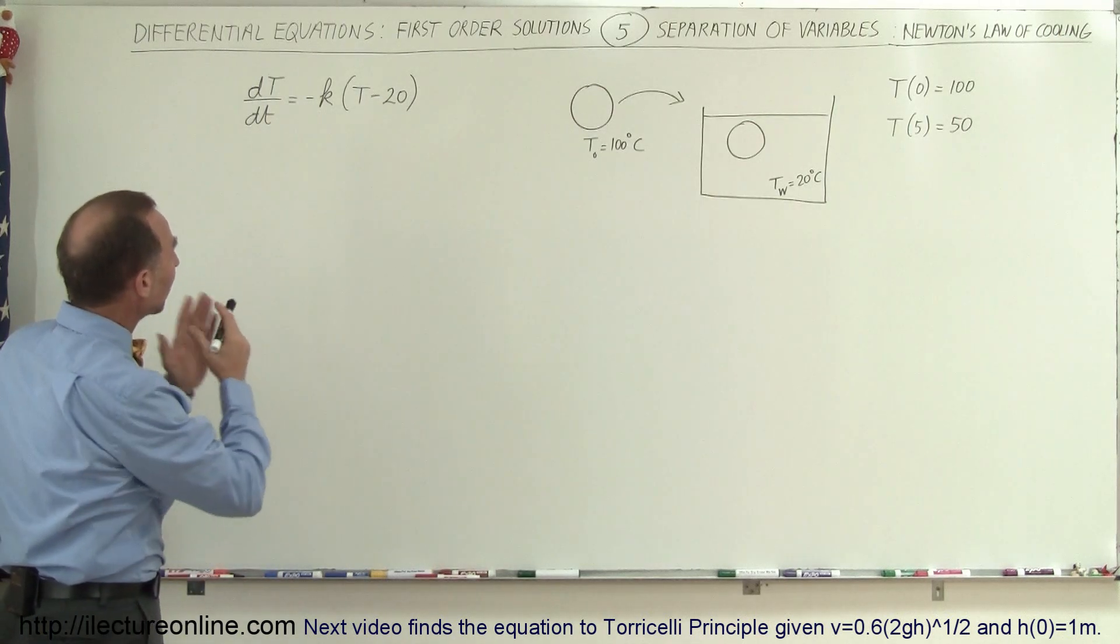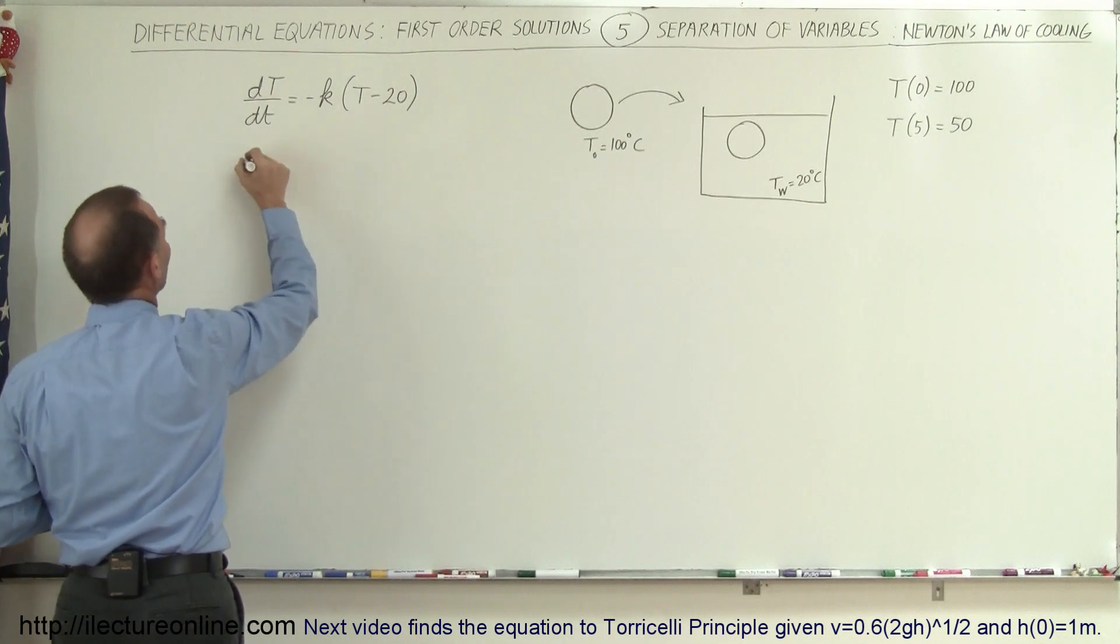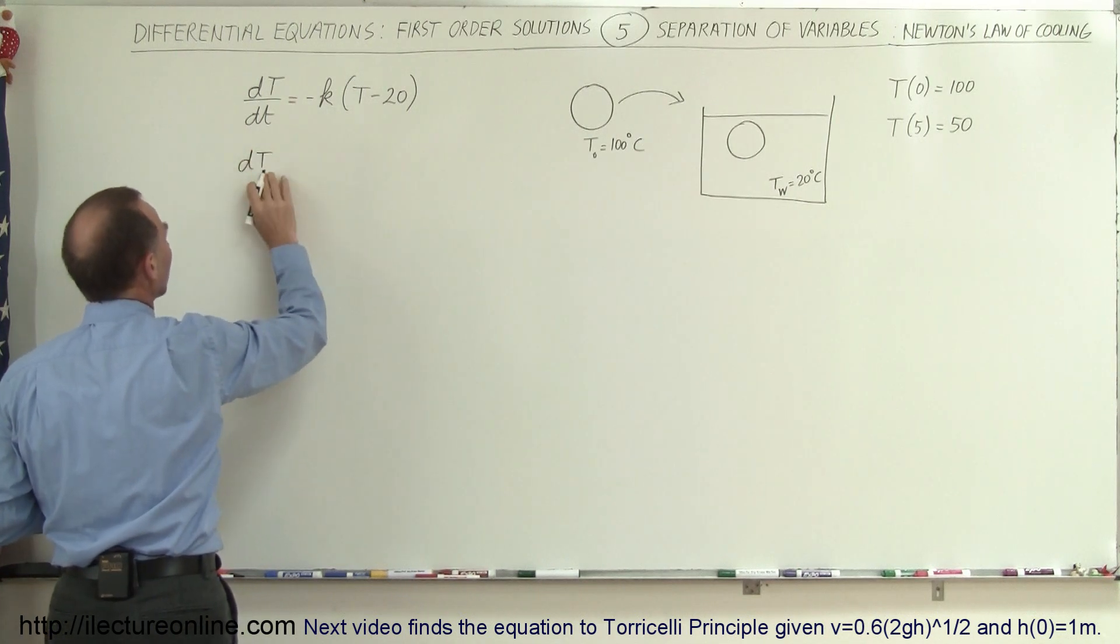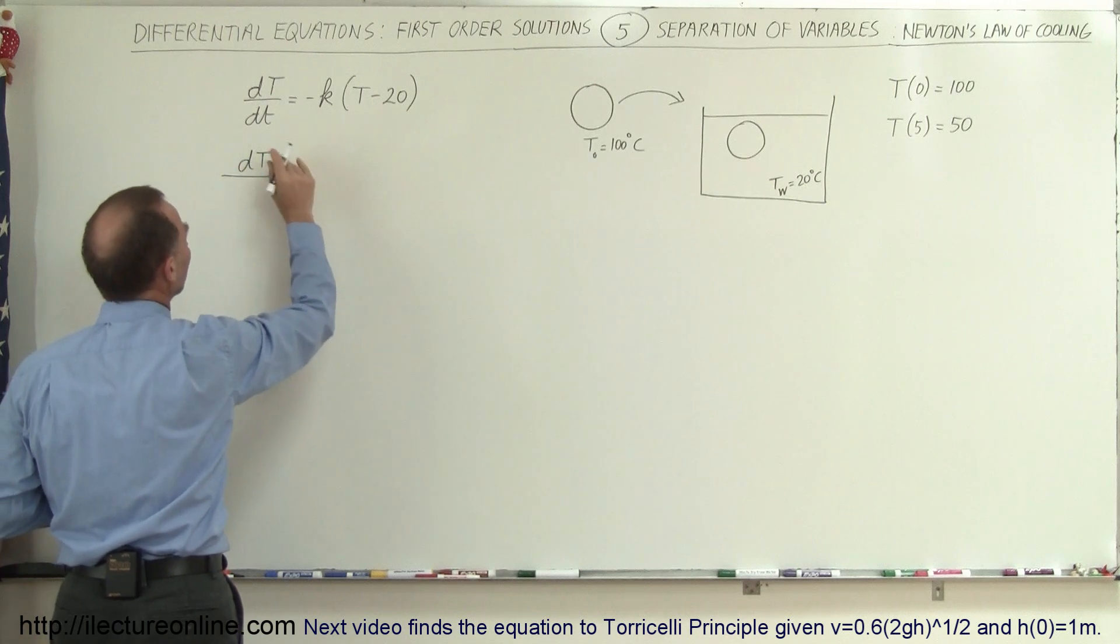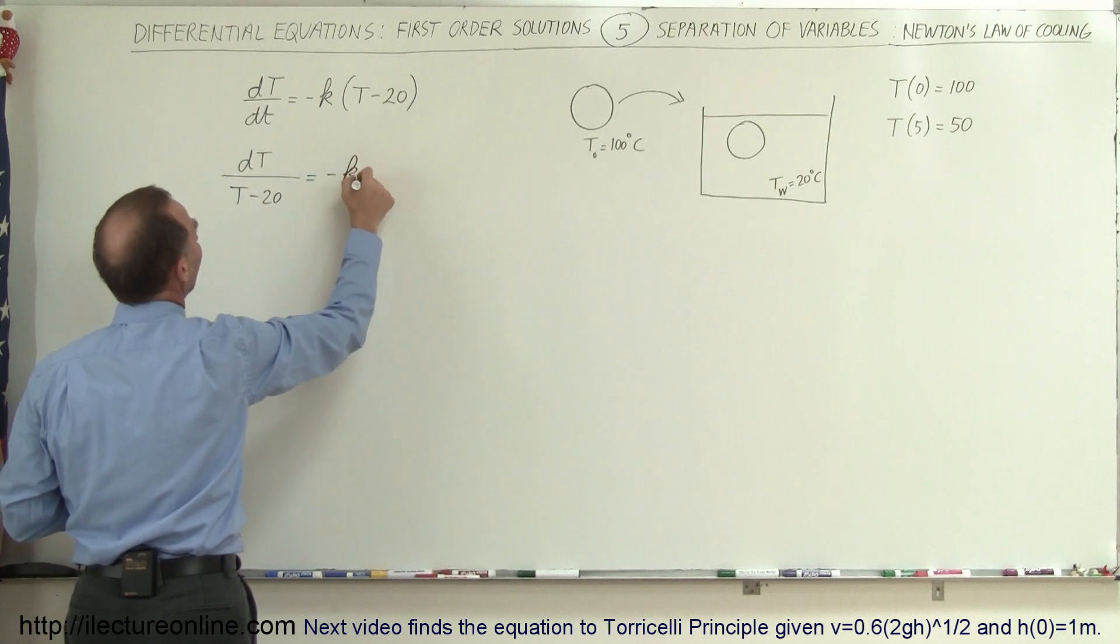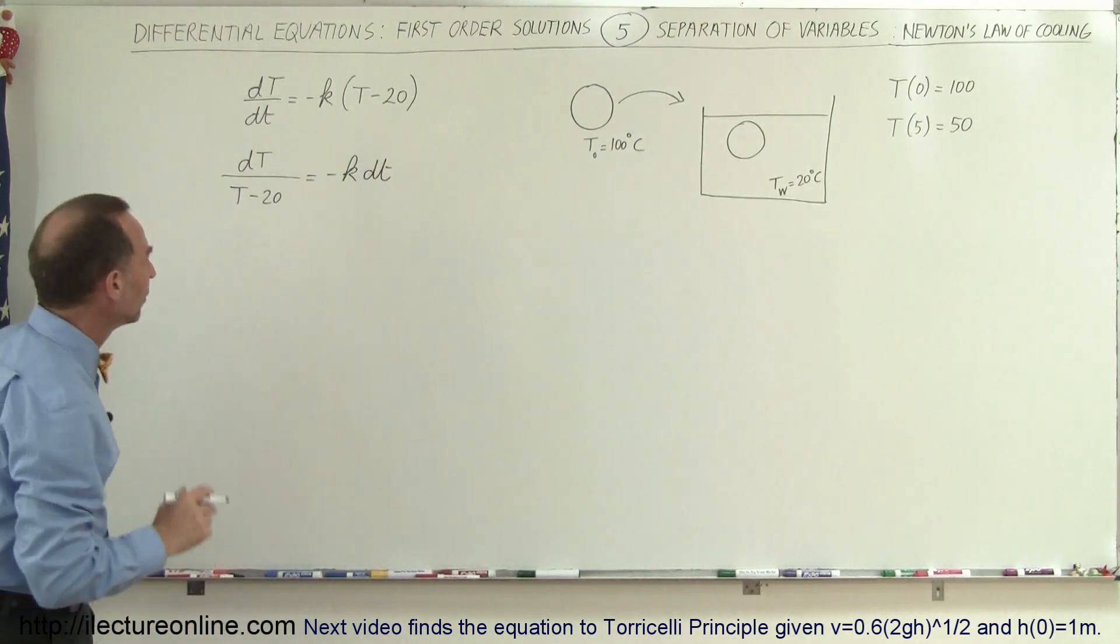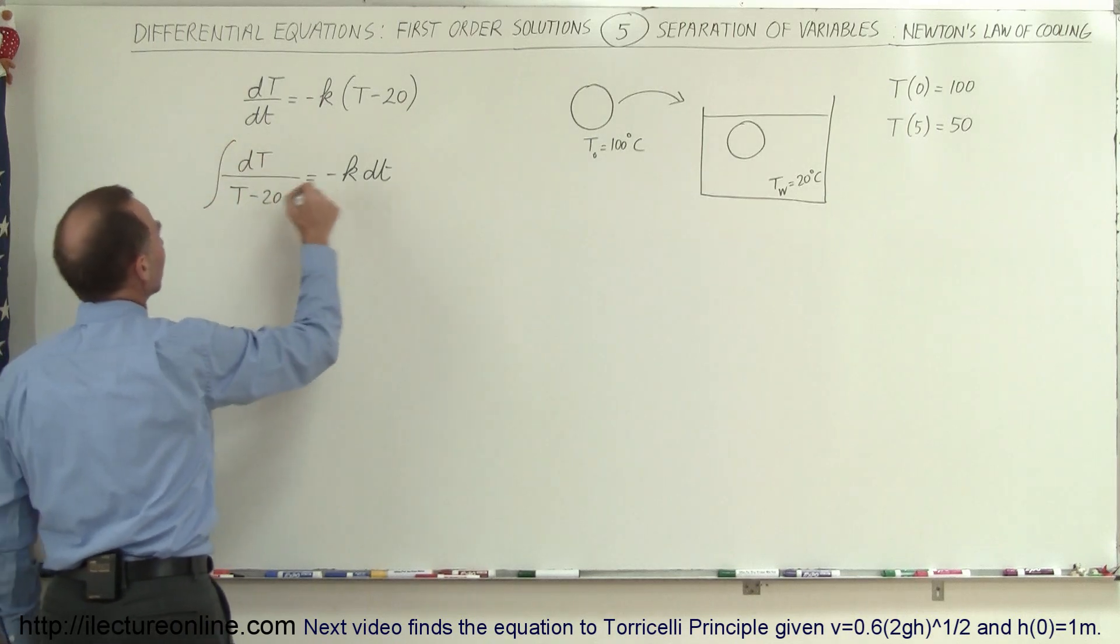First, we want to separate the variables. We can write T minus 20 down here, bring the dT over there. So we can write this as dT (large T standing for temperature) divided by T minus 20 equals minus K times dt (small t standing for time). Now we integrate both sides of the equation.